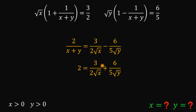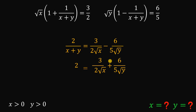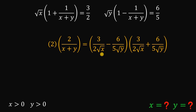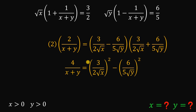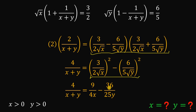Notice we have the same expressions with positive and negative signs. When we multiply these two equations, we get a nice result because we are multiplying two same expressions with different signs. Multiplying gives us 4 over (x plus y) on the left, and the right-hand side equals the square of the first term minus the square of the last term, which simplifies to 9 over 4x minus 36 over 25y.